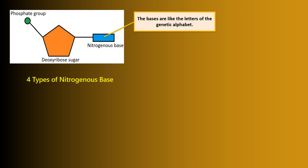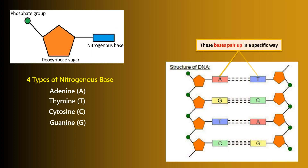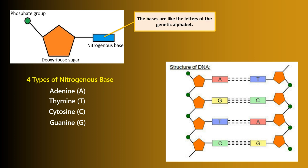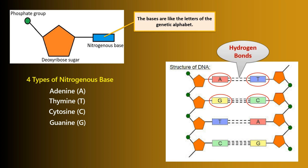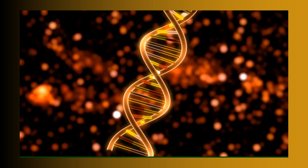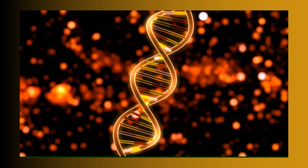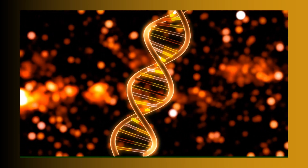and there are four of them: adenine, thymine, cytosine, and guanine. These bases pair up in a specific way — adenine with thymine and cytosine with guanine, with two hydrogen bonds — forming the famous double helix structure of DNA.